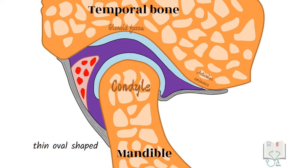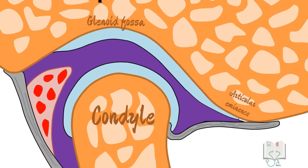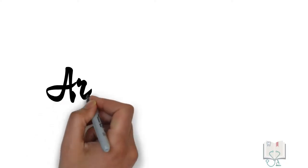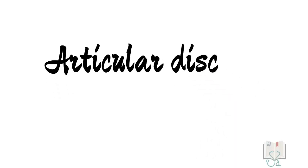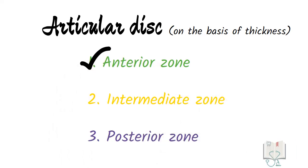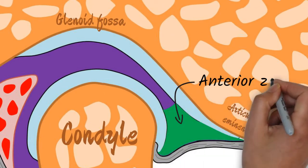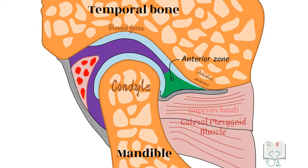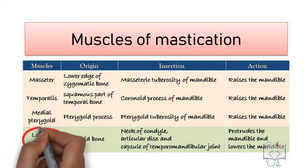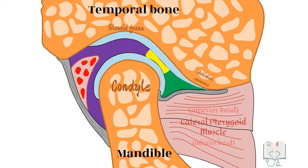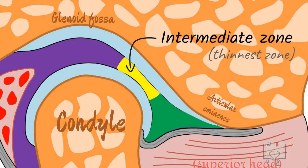The disc is thin and oval-shaped, with surfaces conforming to the opposed articular surfaces. The upper surface is concave or convex, and the lower surface is concave. The disc is divided into three portions on the basis of its thickness: anterior zone, intermediate zone, and posterior zone. The anterior zone lies slightly anterior to the condyle and fuses with the anterior wall of the capsule. The lateral pterygoid muscle inserts in this place — it is the only muscle of mastication that causes opening of the mouth. The intermediate zone lies between the anterior slope of the condyle and the slope of the articular eminence, and is the thinnest zone of the disc.